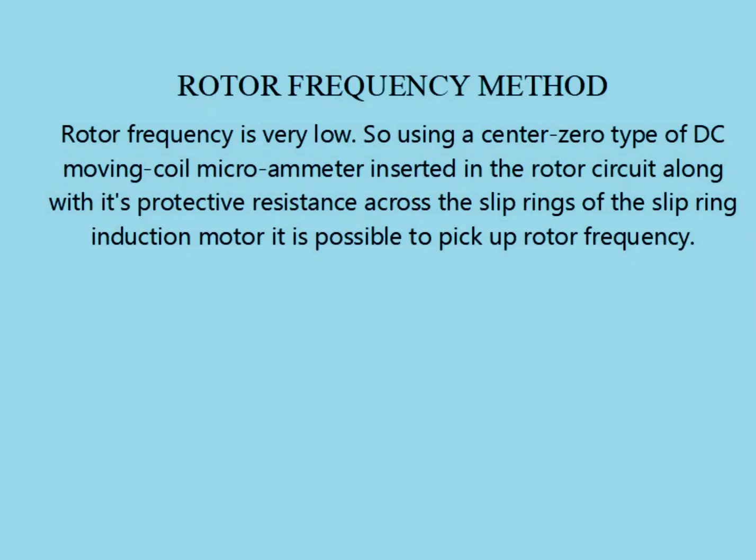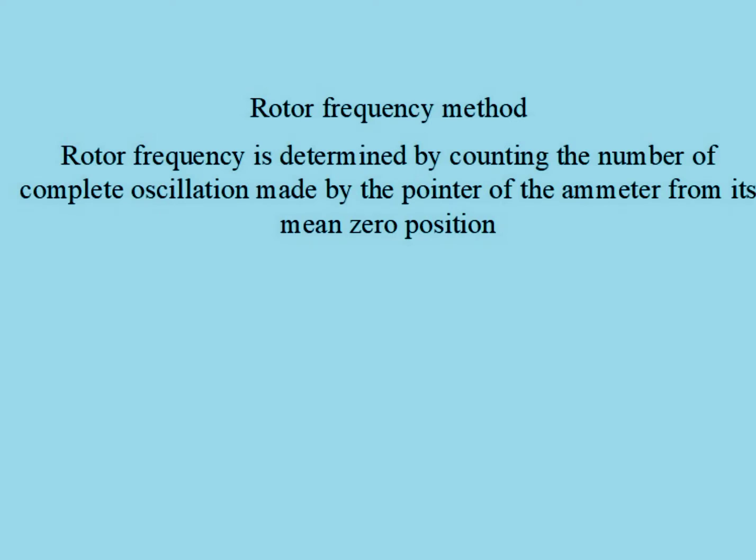The second method is by using the rotor frequency method. Since the rotor frequency is very low, the frequency can be found by inserting a galvanometer in the rotor circuit. In our case, we have used a center zero DC microammeter as a galvanometer. Then the rotor frequency can be determined by counting the number of complete oscillations made by the pointer of an ammeter from its zero position.